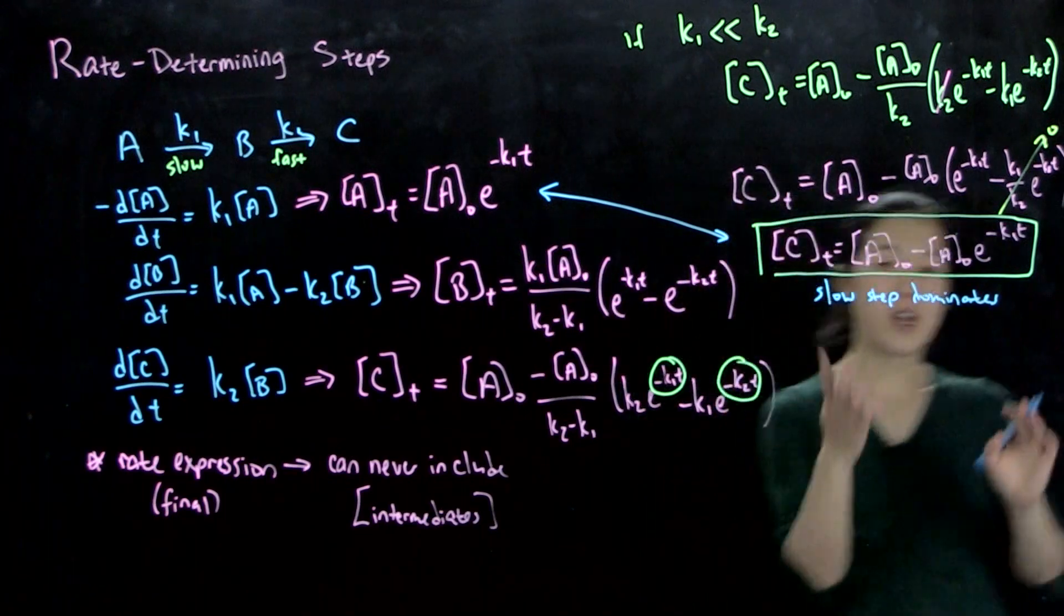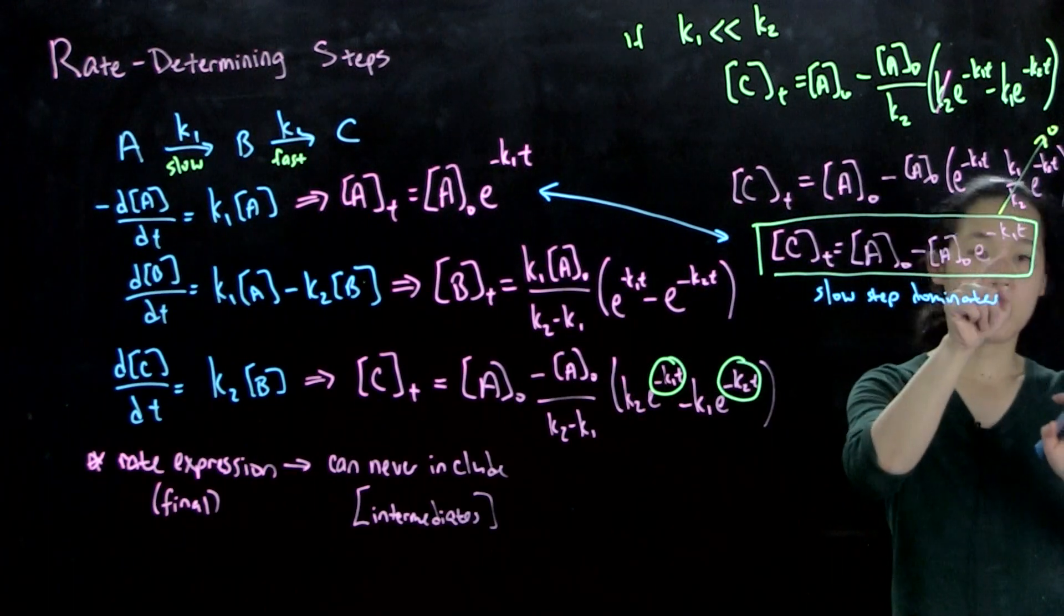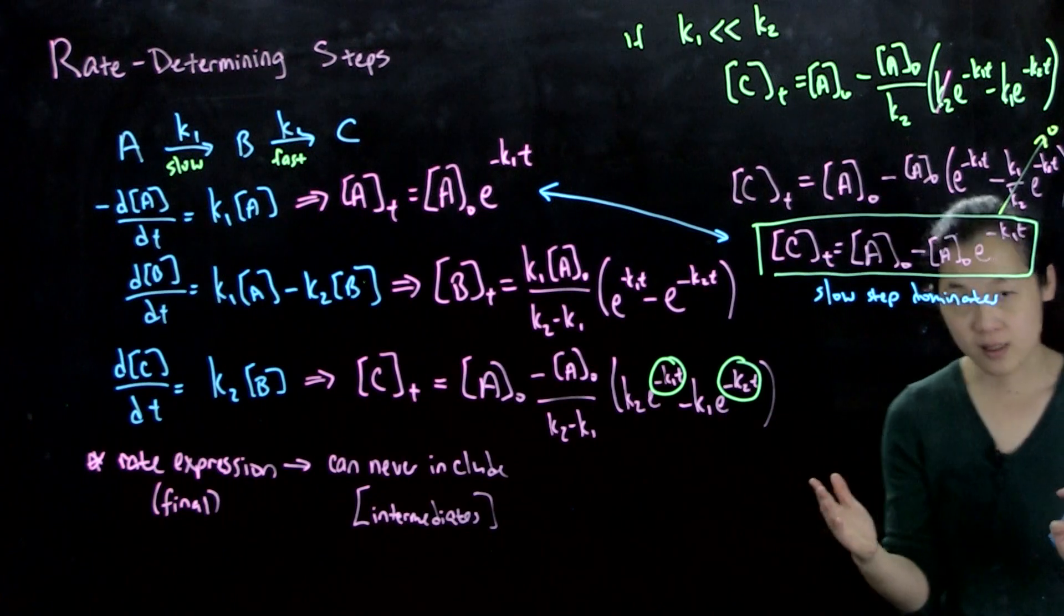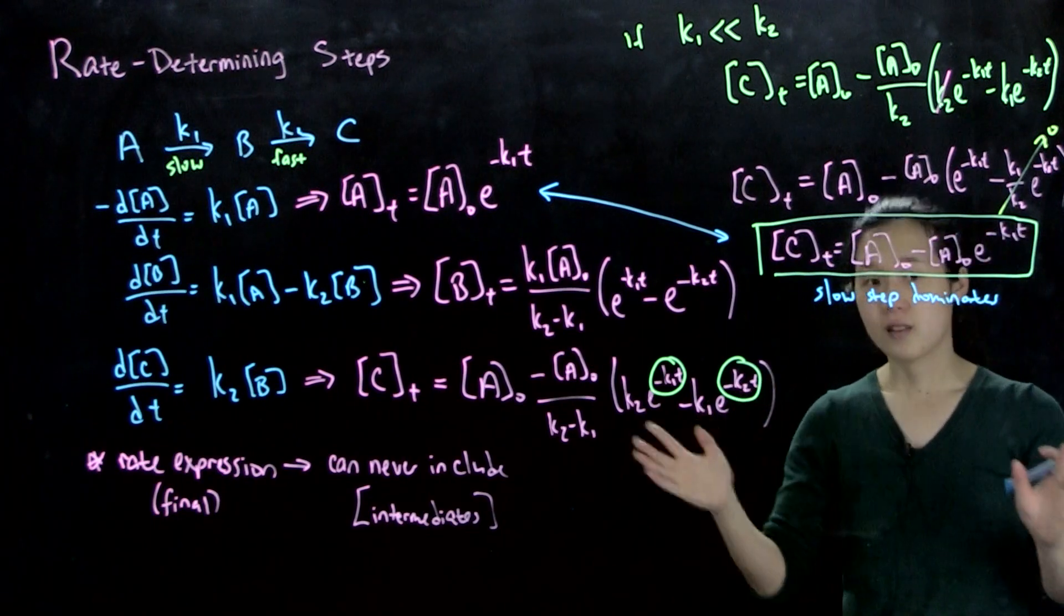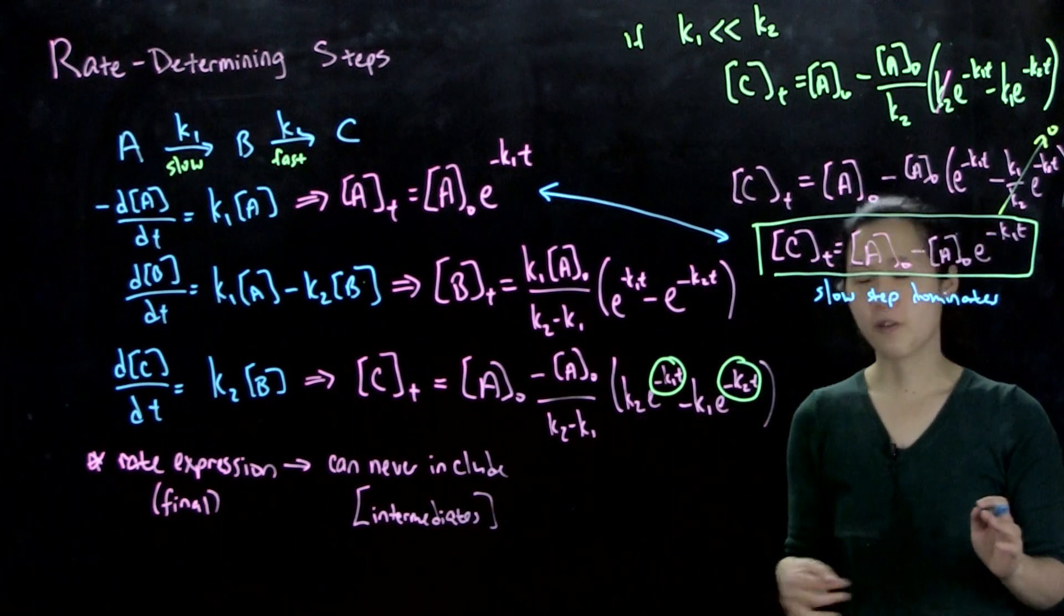So basically, the slow step here is dominating. Slow step dominates. So our reaction, our formation of C is only dependent on k1 and not at all on k2. So the first step is slow, and the second step is fast. All you see is the first step.